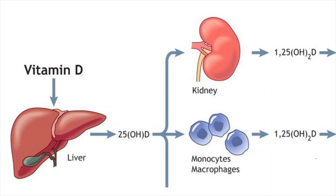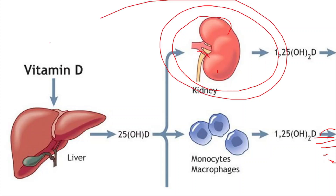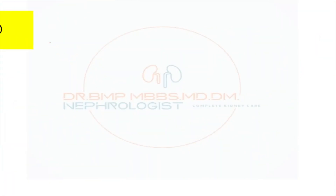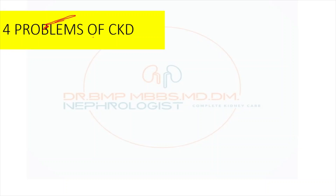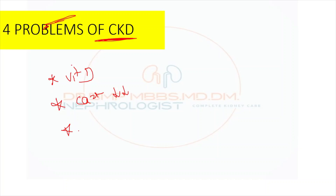Before going into pathophysiology — the pathophysiology is simple. The kidney produces the active form of vitamin D, which absorbs calcium and plays a very important role in calcium and phosphorus homeostasis. In CKD, the kidneys lose function, so active vitamin D won't form, vitamin D level goes down, because of which calcium level goes down. The filtration capacity of the kidney also goes down, so phosphorus level increases.